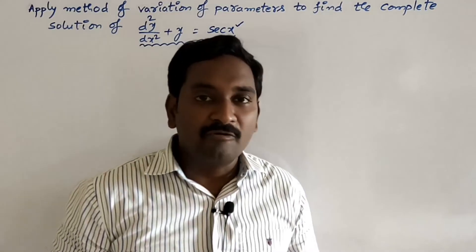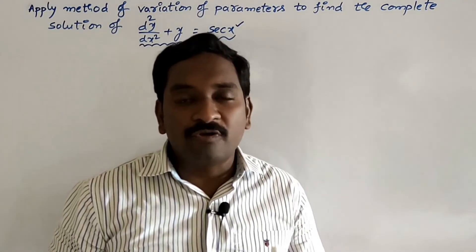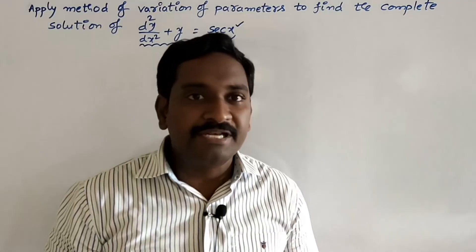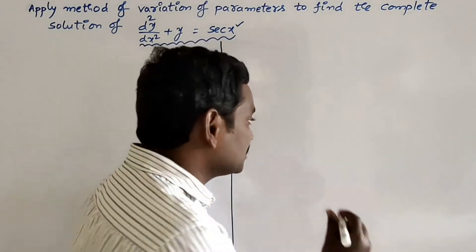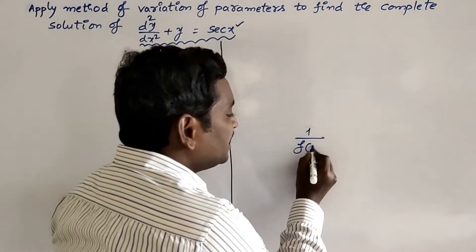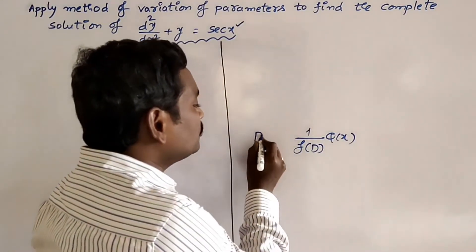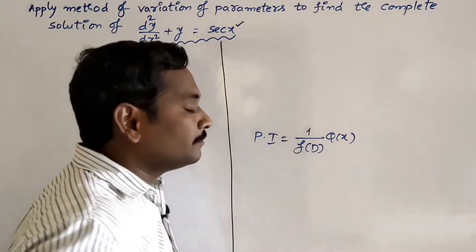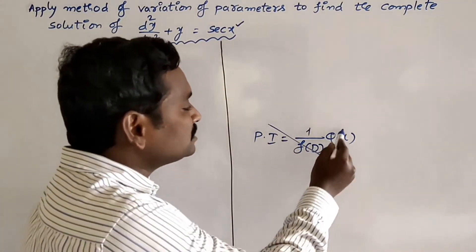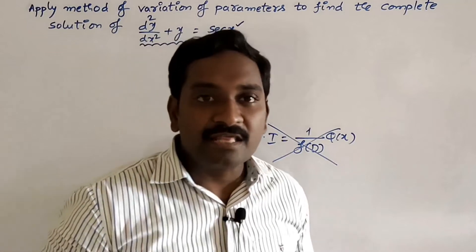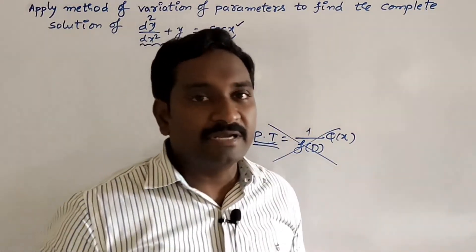First of all, we have to find out the complementary function as usual. After that, to find the particular integral, we can't use the formula 1/f(D) · Q(x). In the method of variation of parameters, we can't use this formula. We find the particular integral by using the complementary function.